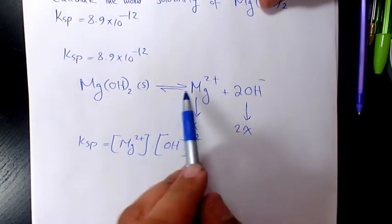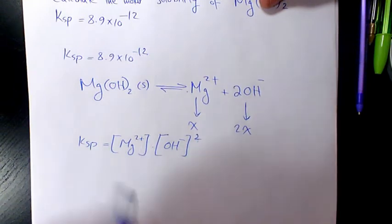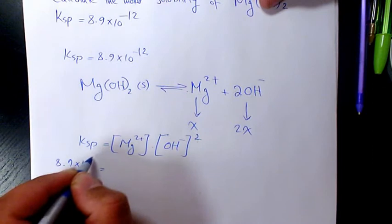This is to the power of 1 because the coefficient is 1. This is to the power of 2 because the coefficient is 2. So we have 8.9 times 10 to the power of negative 12.